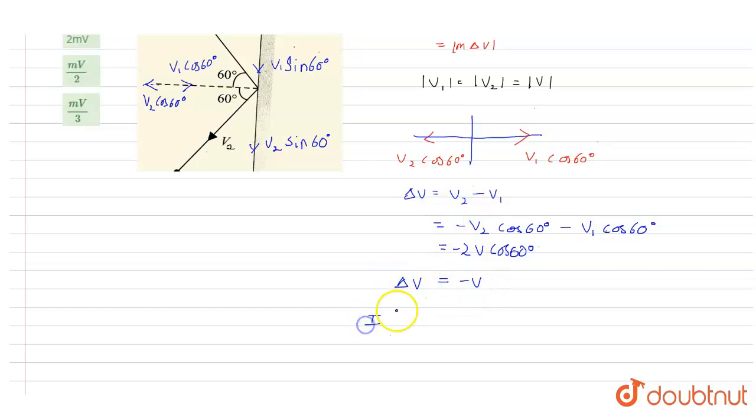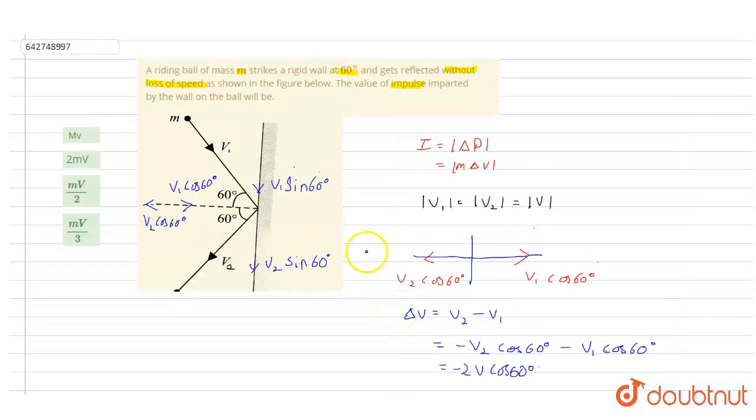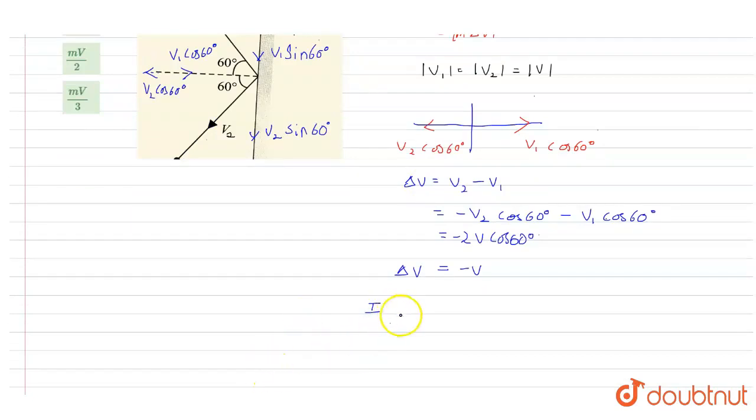We just calculated that impulse I here is m*delta v. So m*delta v will be mass times delta v, which is minus v, and I'll just take the magnitude of it, mv. Therefore impulse is mv.